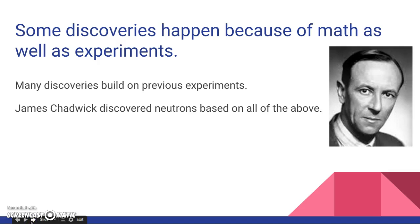Some discoveries happen because of math as well as experiments. Many discoveries build on previous experiments. James Chadwick discovered neutrons based on all of the above. So in your notes, make sure you write this down. Discoveries happen because of experiments, but they can also happen because of the math. And that's part of why math is so important in chemistry.